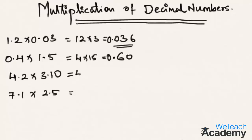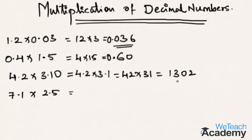Now let us take another example: 4.2 multiplied by 3.1 — note that 3.10 equals 3.1. This is nothing but 42 multiplied by 31, which equals 1302. The number of digits after the decimal point in the question are 1 and 1, giving two decimal places total, so the decimal point comes before two places from the left — that is 13.02.